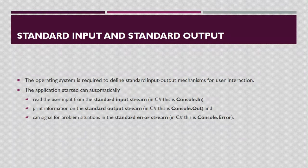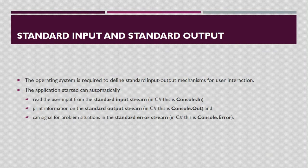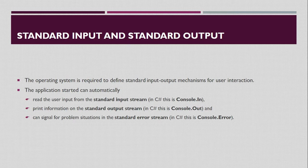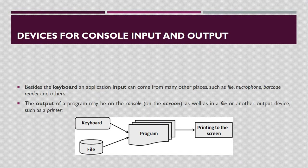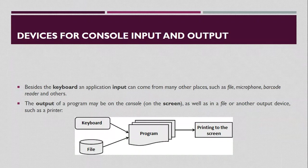In C#, we use the standard input stream which is Console.In, the standard output stream which is Console.Out, and the standard error stream which is Console.Error — to read user input, to print information to the output device, or to display error messages for problem situations in the program respectively. The devices for console input and output are most commonly the keyboard and computer screen, but we can also use files, microphones, barcode readers, printers, and so on.